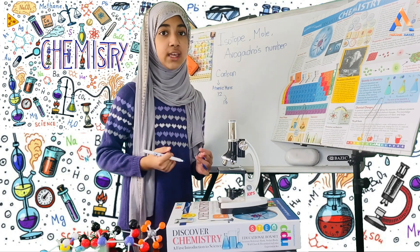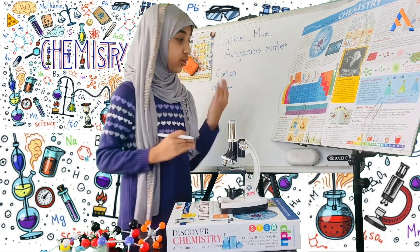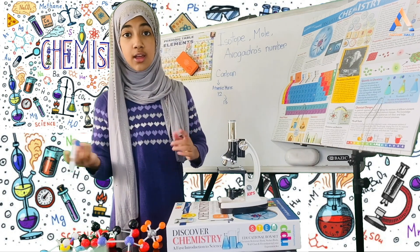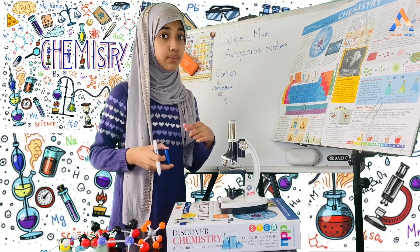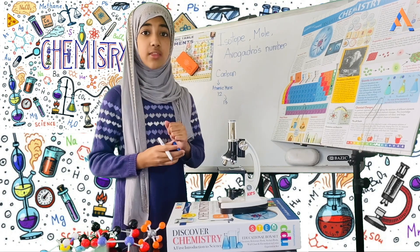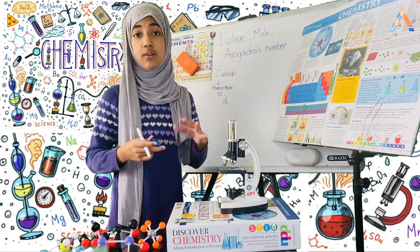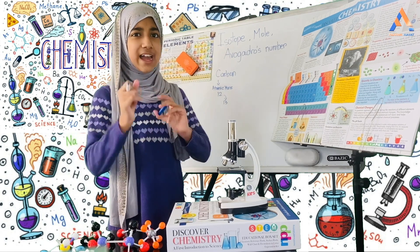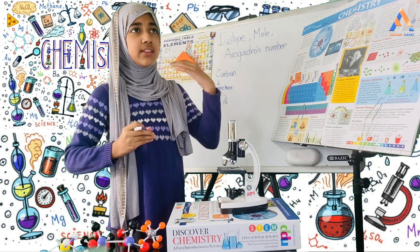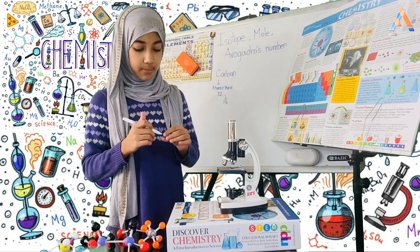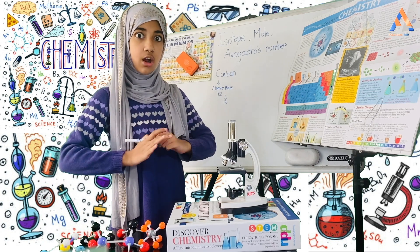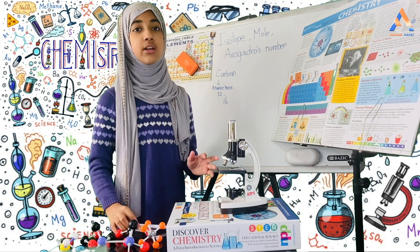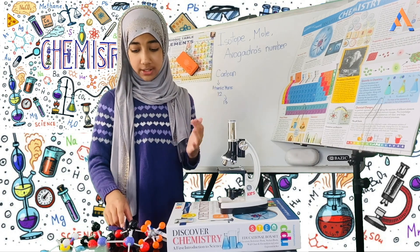So as you can see, for carbon the atomic mass can be 12 or 13. The proton won't change, but because there are two types, the number of neutrons can be 6 or 7. Just like that, for hydrogen, it's also an isotope, because there is a difference in the number of neutrons.